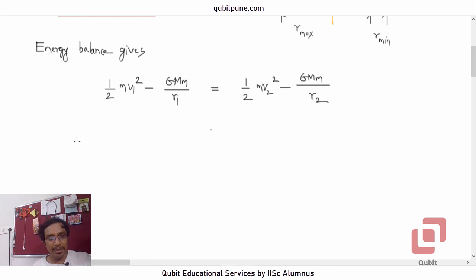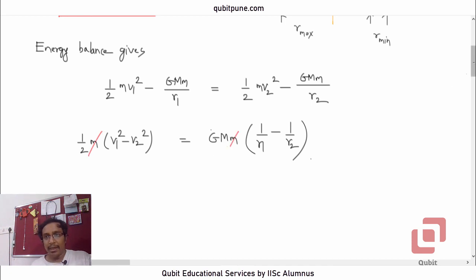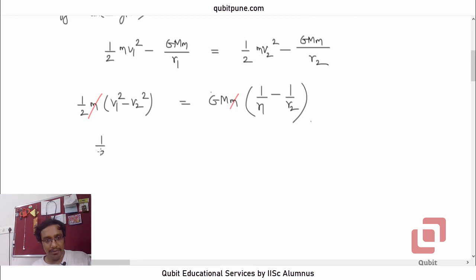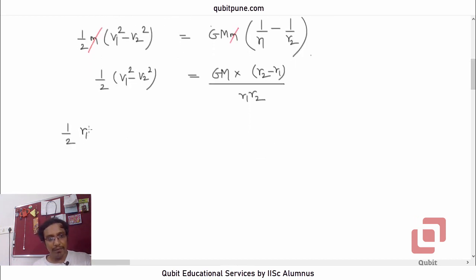We simplify: bringing kinetic energies to one side gives ½M·(V1² − V2²) = G·M_s·m·(1/R1 − 1/R2). We can cancel m, then simplify the right side to G·M_s·(R2 − R1)/(R1·R2). Shifting R1·R2 to the left-hand side gives: ½·R1·R2·(V1² − V2²) = G·M_s·(R2 − R1).